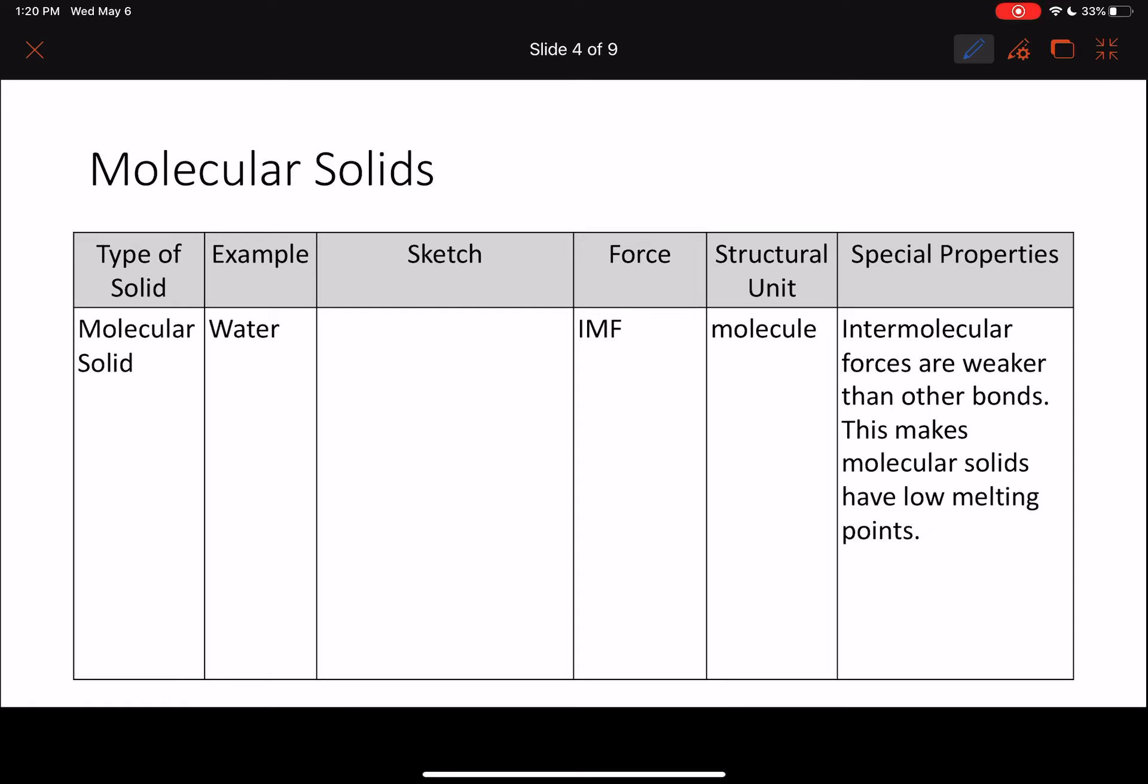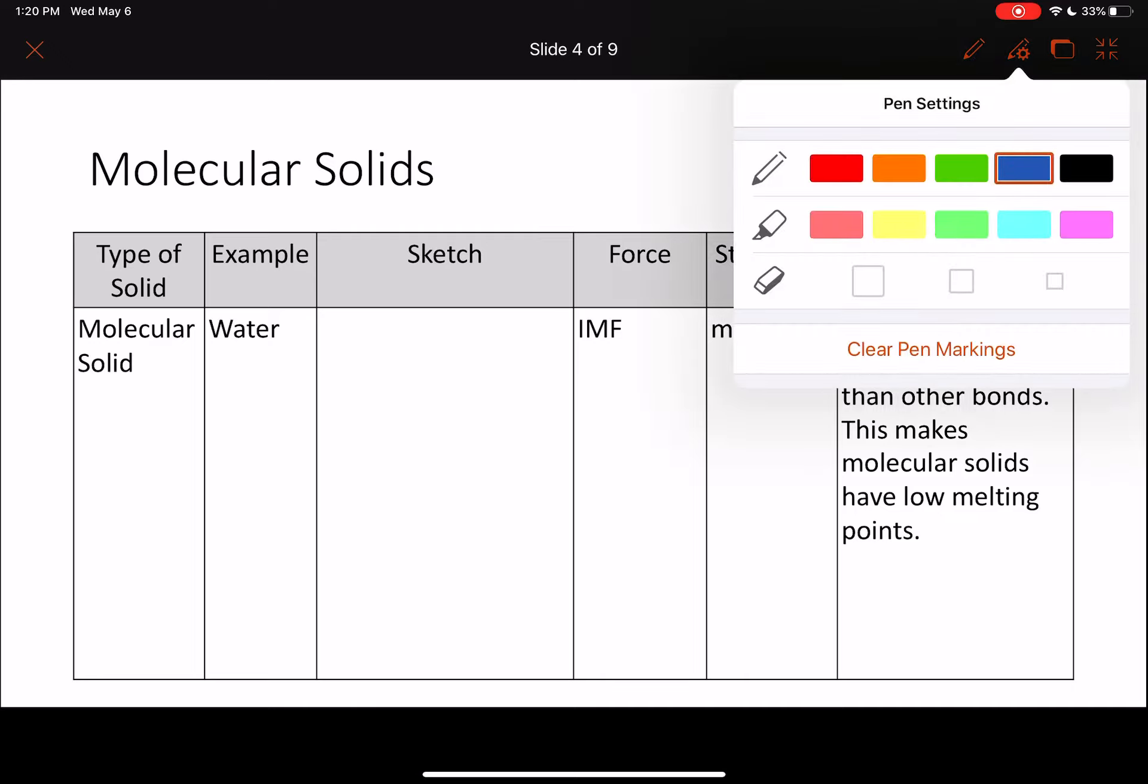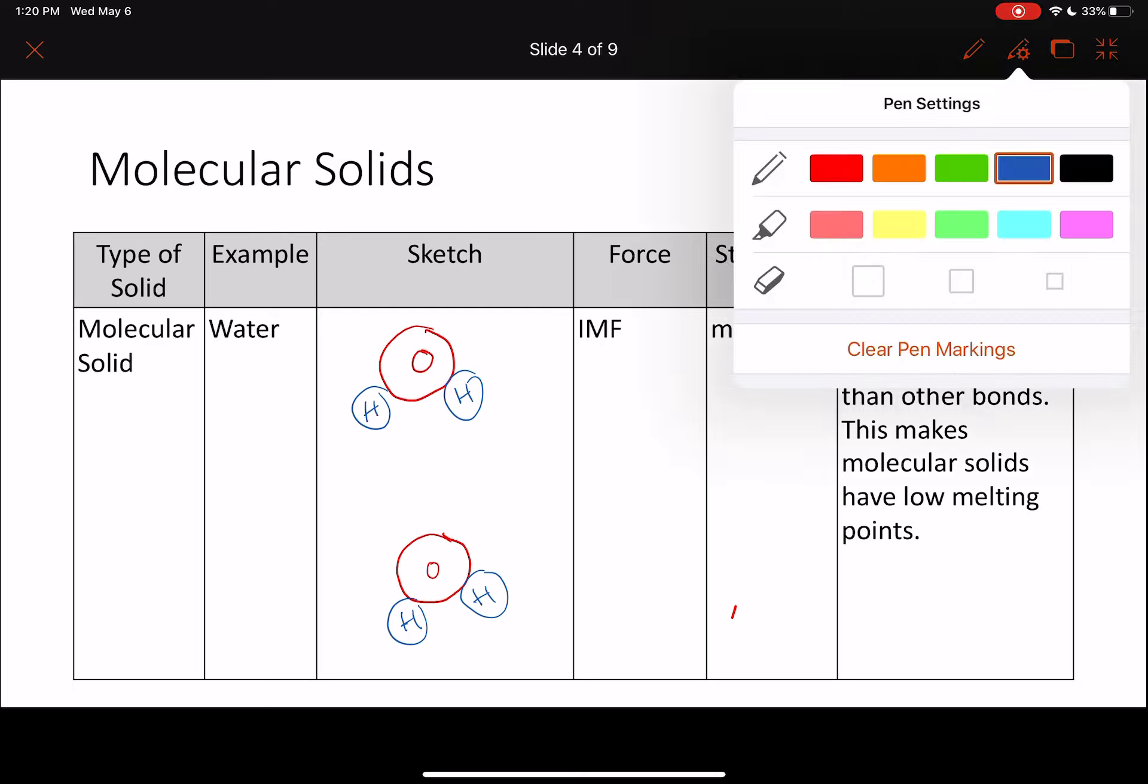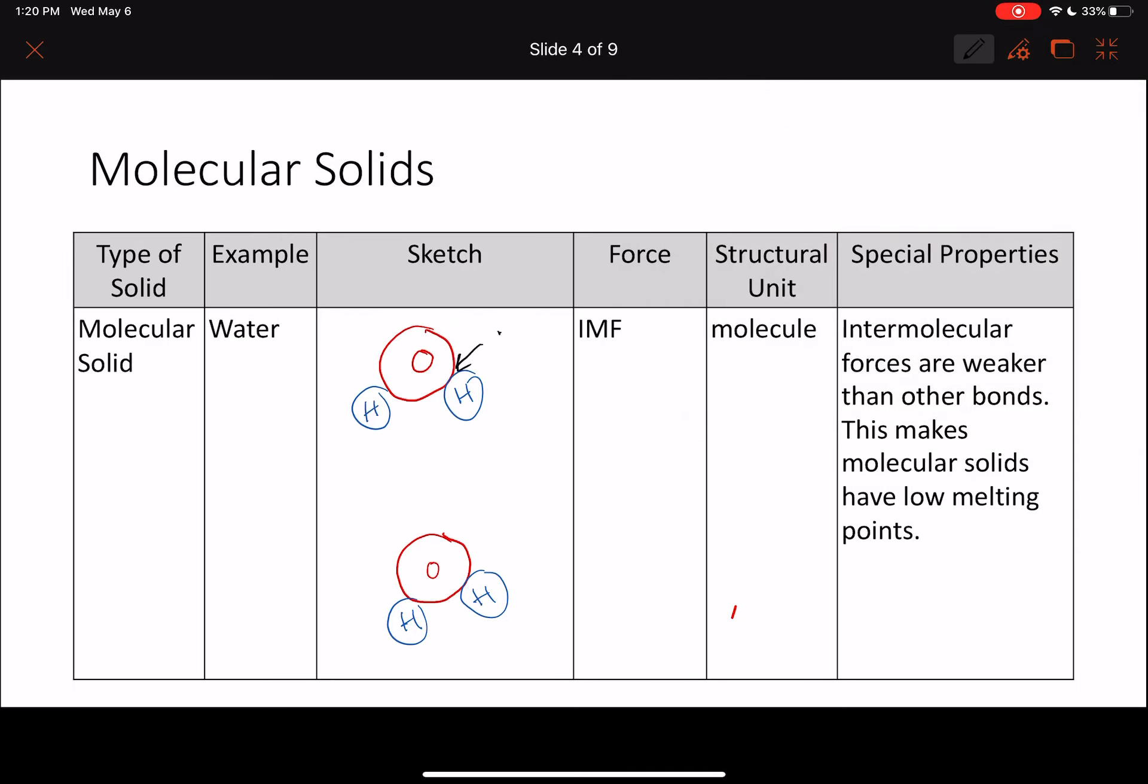Moving on to the next, we have molecular solids. Molecular solids are something like water. This is our water molecule with hydrogen, hydrogen. Within our water molecule itself, this is a covalent bond. But if you have solid water like ice, the thing that's holding all of the water molecules together is not a covalent bond.